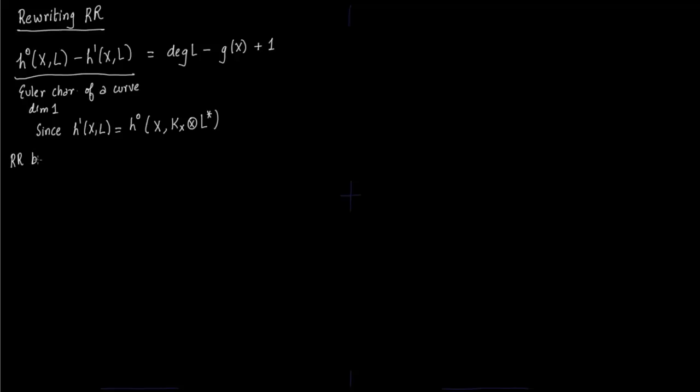So Riemann-Roch now becomes h0 of x, L minus h0 of x, kx tensor with L star. This is equal to degree of L minus genus plus 1. So this is the most commonly referred to Riemann-Roch theorem form.